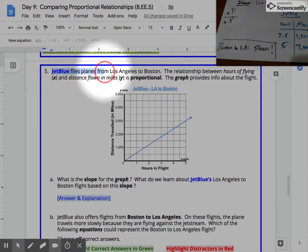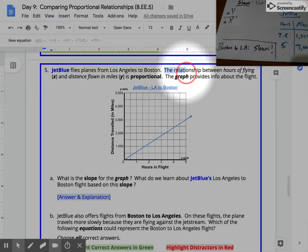Problem 5 tells us that JetBlue flies planes from Los Angeles to Boston. We're told that the relationship between the hours of flying and the distance flown in miles is going to be proportional. So y is going to show us our distance flown in miles, and x is going to show us our hours in flight.